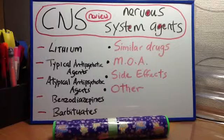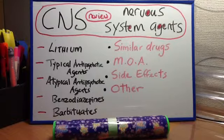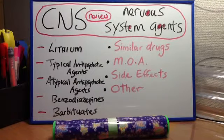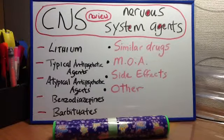Continuing on, we're going to talk about lithium, typical antipsychotic agents, atypical antipsychotic agents, and benzodiazepines and barbiturates. First, lithium. Mechanism of action: inhibits the phosphoinositol second messenger cascade. Clinical uses: bipolar disorder. Side effects include tremor, hypothyroidism, and nephrogenic diabetes insipidus.